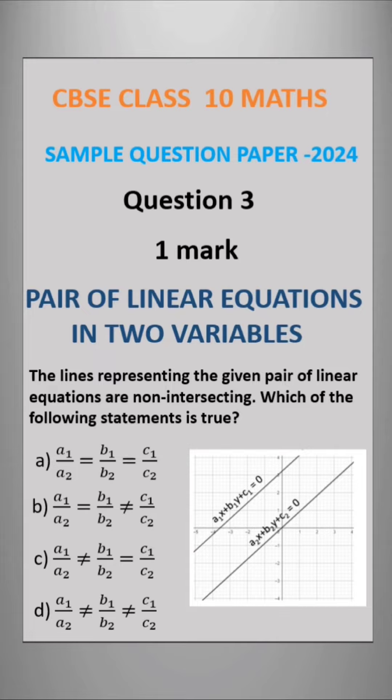The question is: the lines representing the given pair of linear equations are non-intersecting. Here you can observe these two lines are non-intersecting. Which of the following statements is true? Four options are given. Let us see which one is correct.